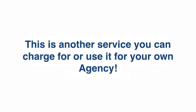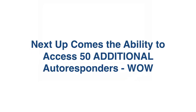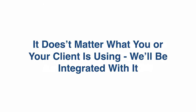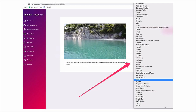This is another service you can charge for or you can use it for your own agency. Next up comes the ability to access 50 additional autoresponders. It doesn't matter what you or your client is using, we'll be integrated with it. Just check out the dashboard right here. In the main version you get 10 autoresponders. In this Elite upgrade, you get an extra 50. So whatever autoresponder you need, we got you covered.